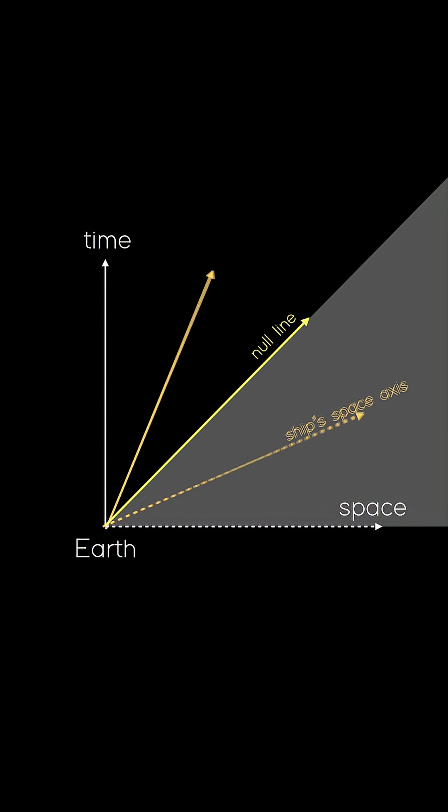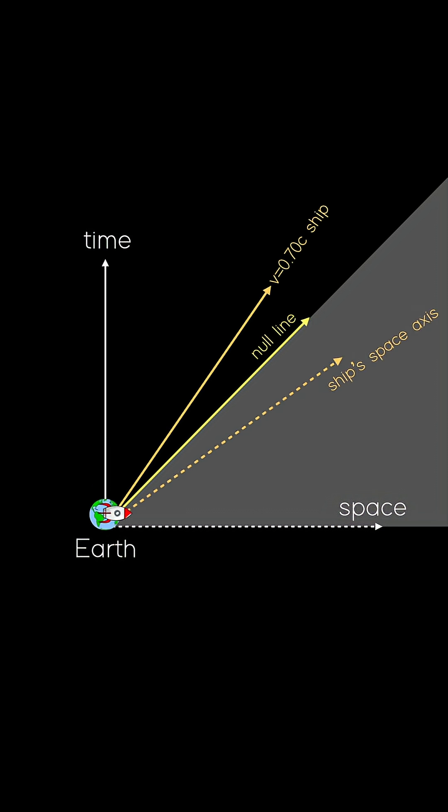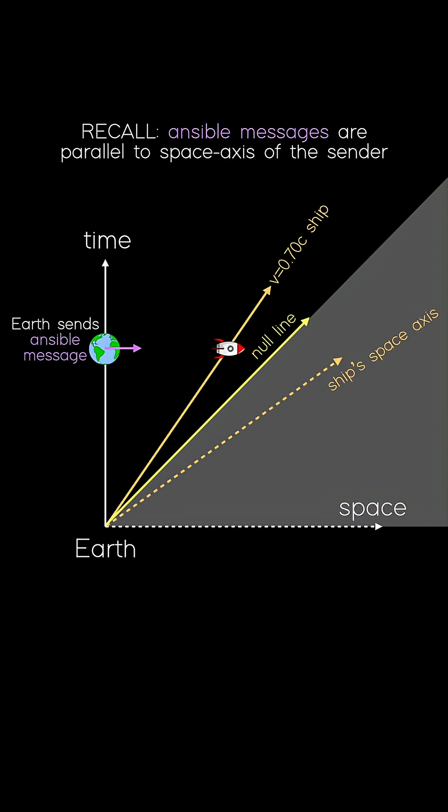First, consider a faster ship, one moving, say, 70% the speed of light. After a certain amount of time, the Earth sends an FTL message to the ship, in fact, an ansible one.